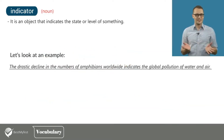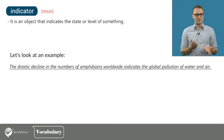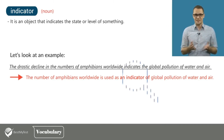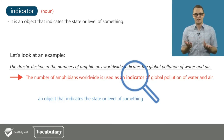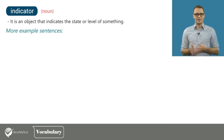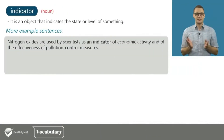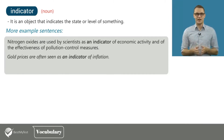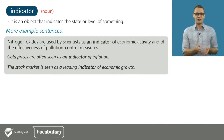Now let's look at an example of how to use the word indicator. Considering the sentence 'the drastic decline in the numbers of amphibians worldwide indicates the global pollution of water and air,' we can say that the number of amphibians worldwide is used as an indicator of global pollution of water and air. More examples: Nitrogen oxides are used by scientists as an indicator of economic activity and of the effectiveness of pollution control measures. Gold prices are often seen as an indicator of inflation. The stock market is seen as a leading indicator of economic growth.